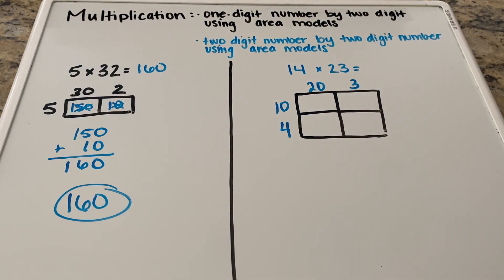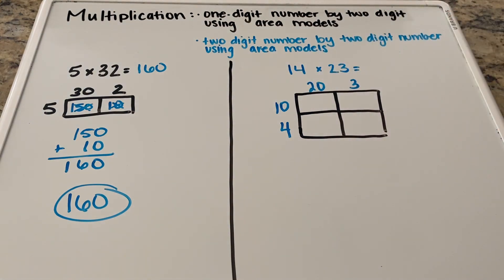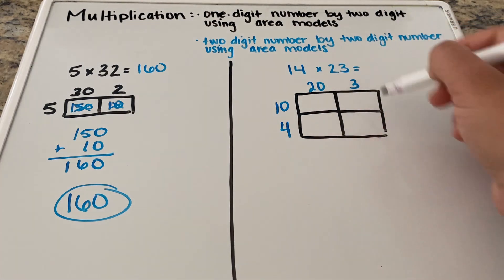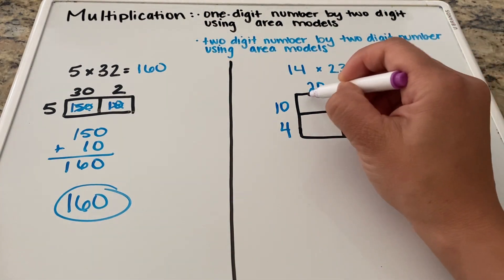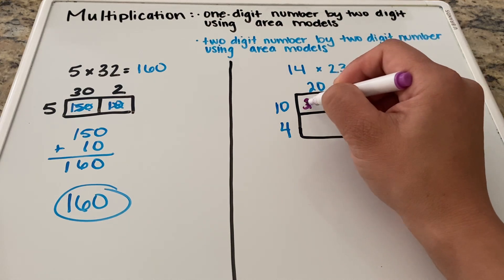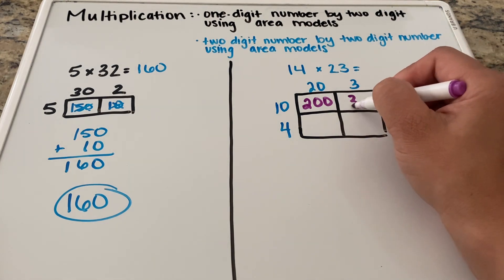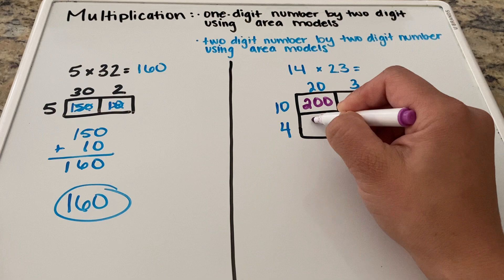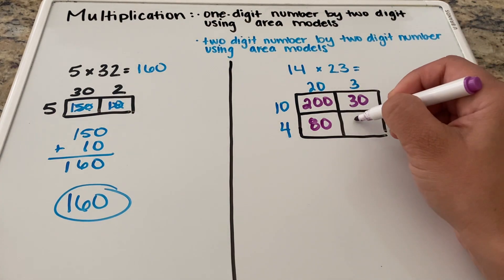So our next step is going to be multiplying across. We're going to multiply our 10 to our 20 or 10 to our three and then we are going to multiply our four to our 20 and our four to our three and fill up all these boxes. So 10 times 20 is 200. 10 times 3 is 30. 4 times 20 is 80. And 4 times 3 is 12.